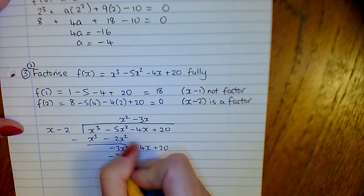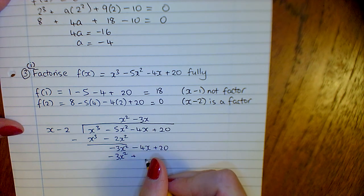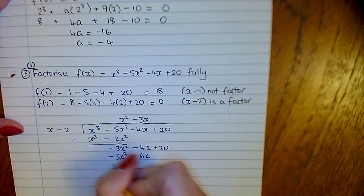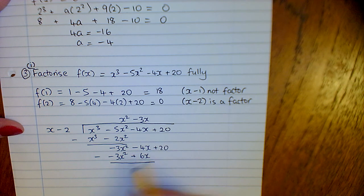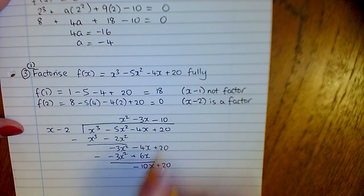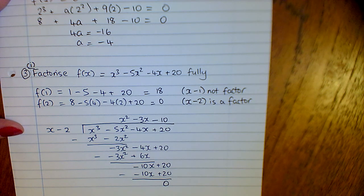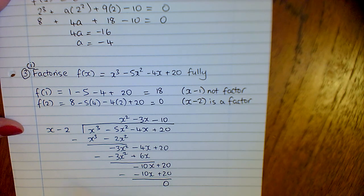Multiply by minus 3x to get minus 3x squared. Minus 3x times minus 2x gives you plus 6x. Subtract—our x squared disappears, minus 4x minus 6x gives minus 10x. Then multiply by minus 10, so minus 10 by x gives minus 10x plus 20. When you take that away, you get 0. If you don't get 0 here, you've made a mistake somewhere, because we're saying x minus 2 is a factor so we shouldn't get any remainder.